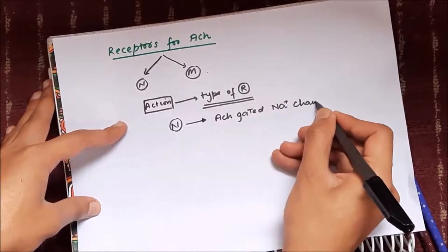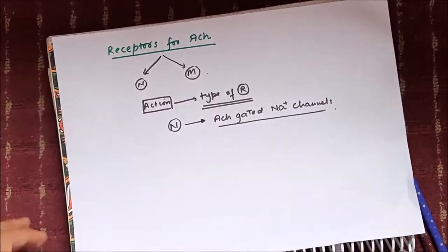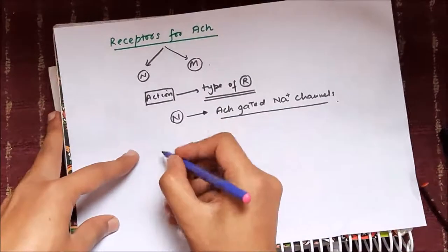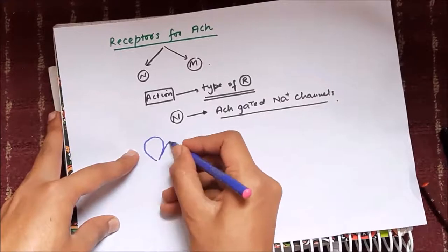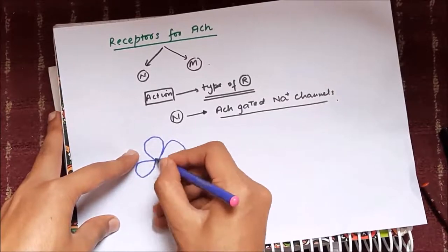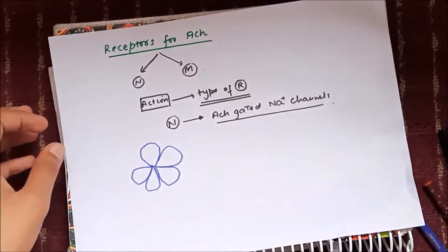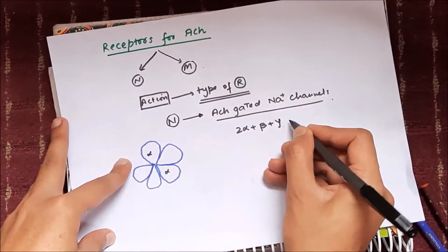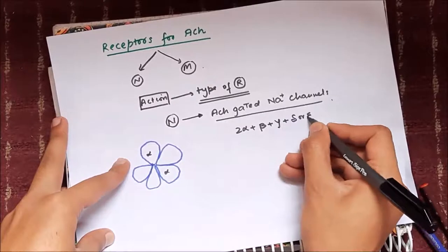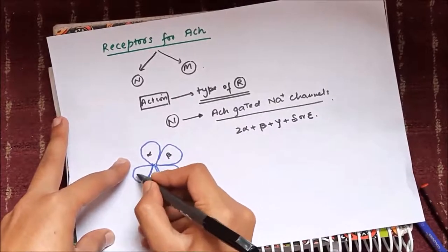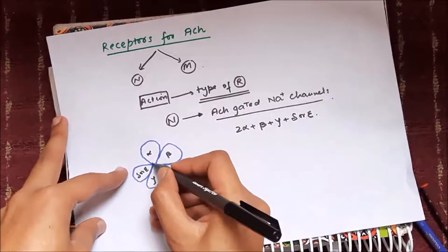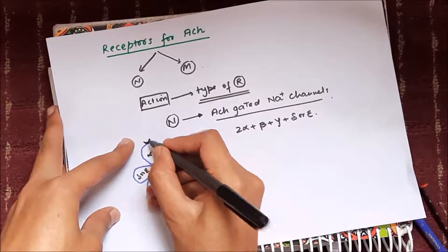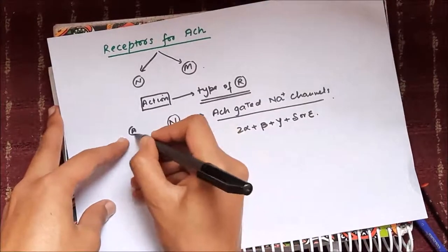Nicotinic receptors are basically acetylcholine-gated sodium channels. These receptors are composed of five subunits — two alpha subunits, one beta subunit, one gamma subunit, and a fifth subunit which can be an epsilon or delta subunit. These subunits form a lumen in the center.